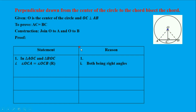Now the proof is presented in a table with statements and reasons. We consider two triangles: triangle AOC and triangle BOC.